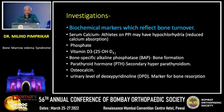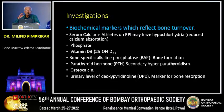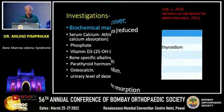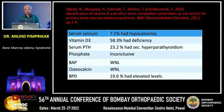Investigation-wise, the biochemical markers reflecting bone turnover are the key investigations needed, including serum calcium, phosphate, vitamin D3, bone alkaline phosphatase (BAP), PTH, osteocalcin, and DPD. BAP and osteocalcin are bone-forming parameters, whereas DPD levels indicate bone resorption. Serum calcium levels can also be low in patients taking PPIs, which causes hypochlorhydria and thus reduces calcium absorption.